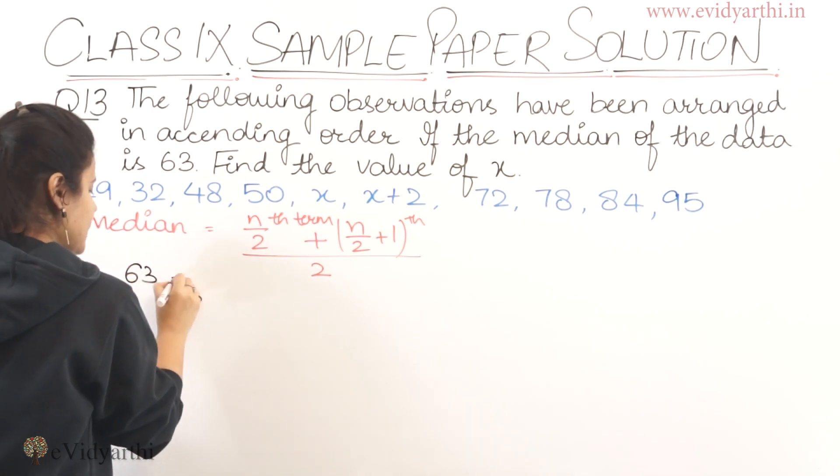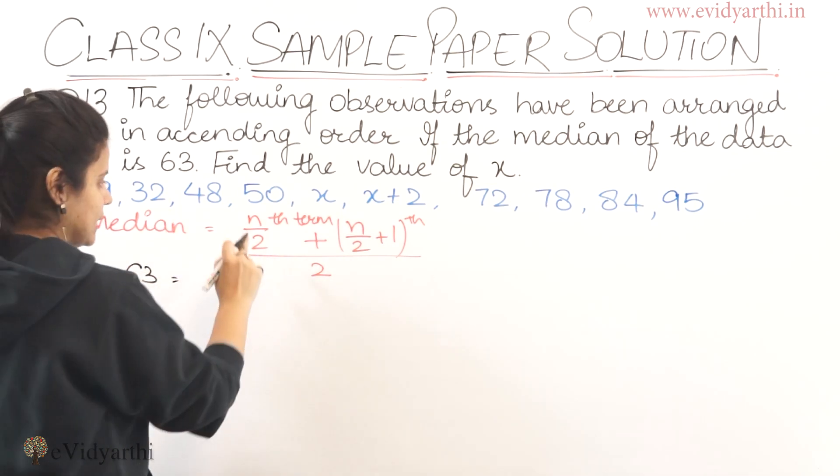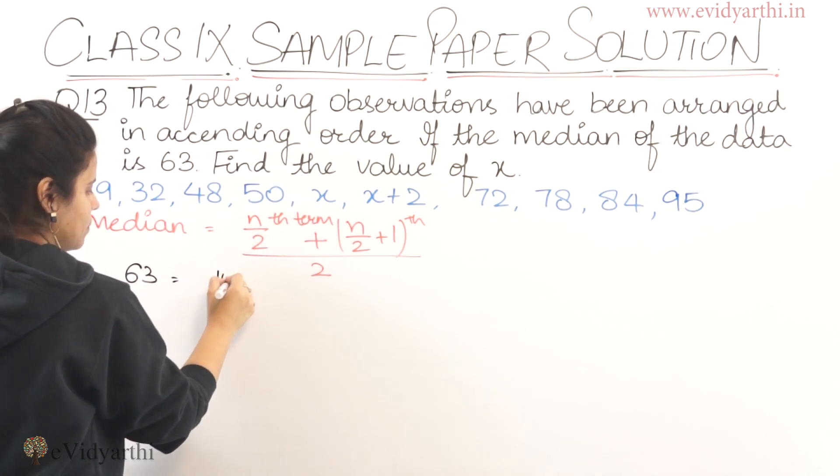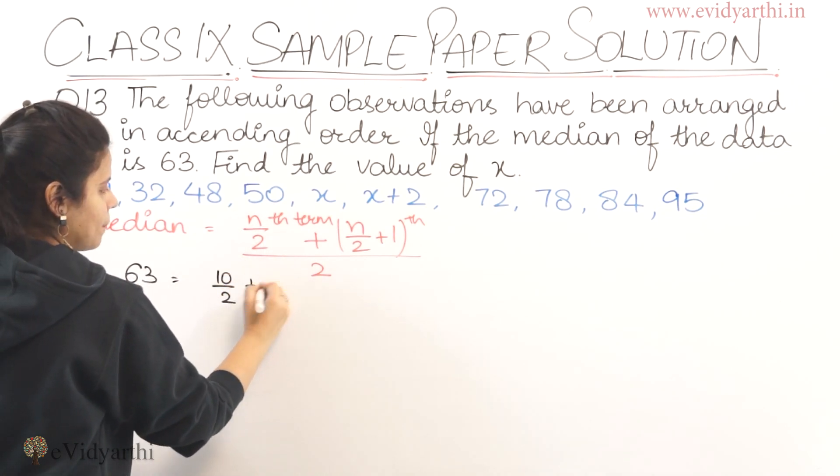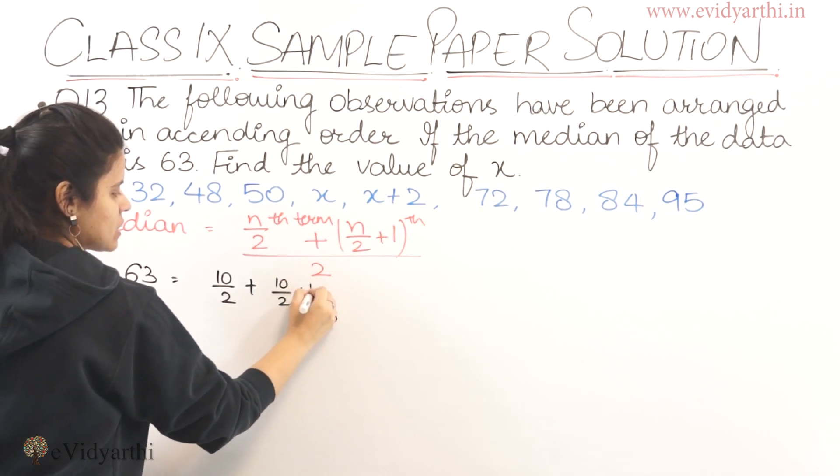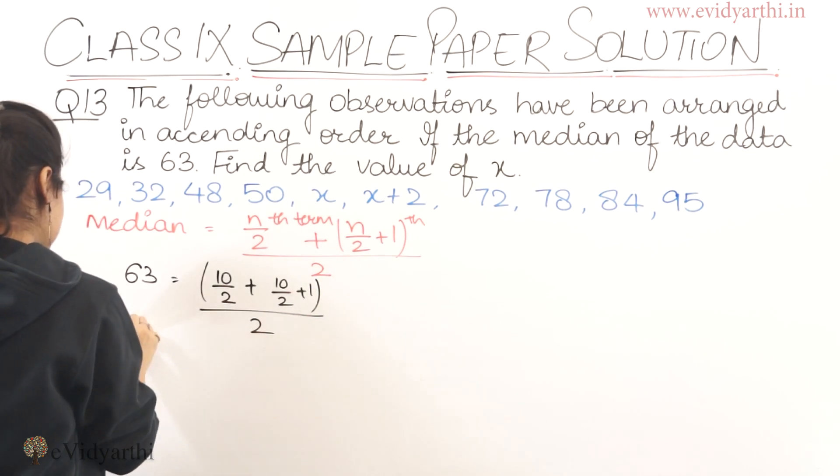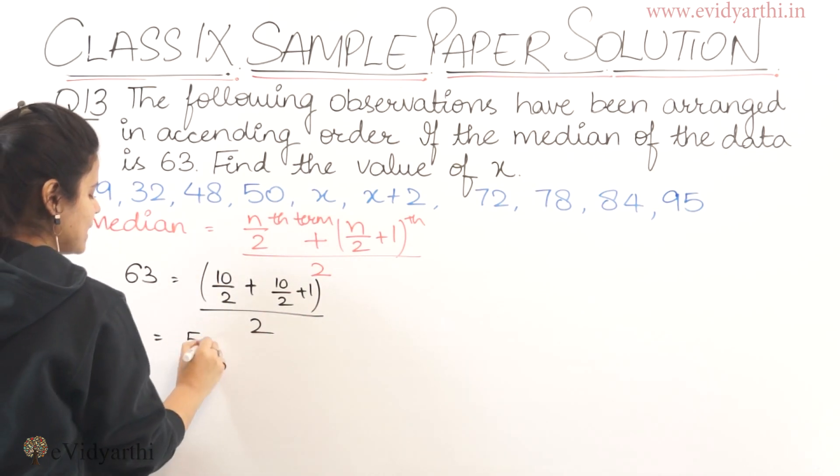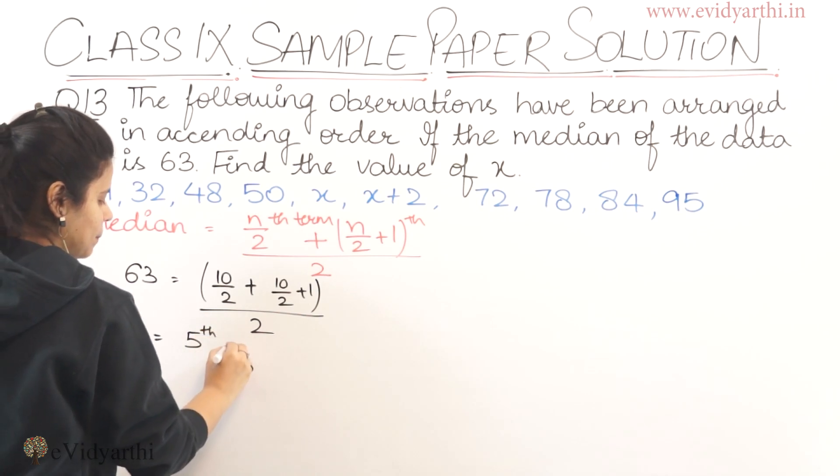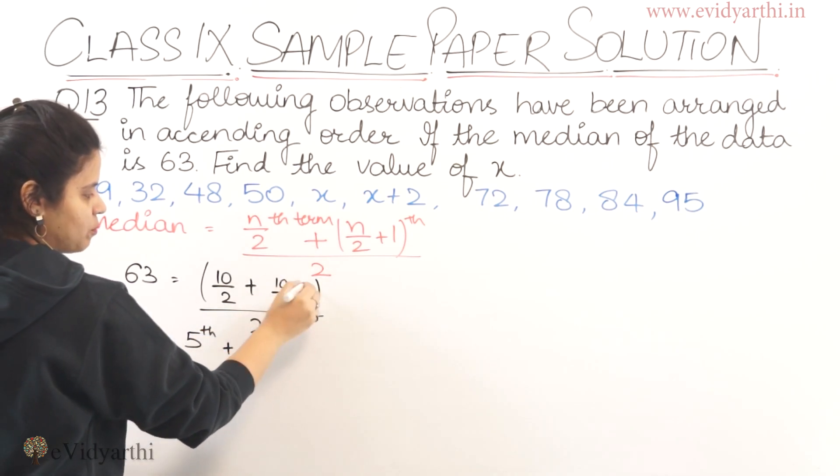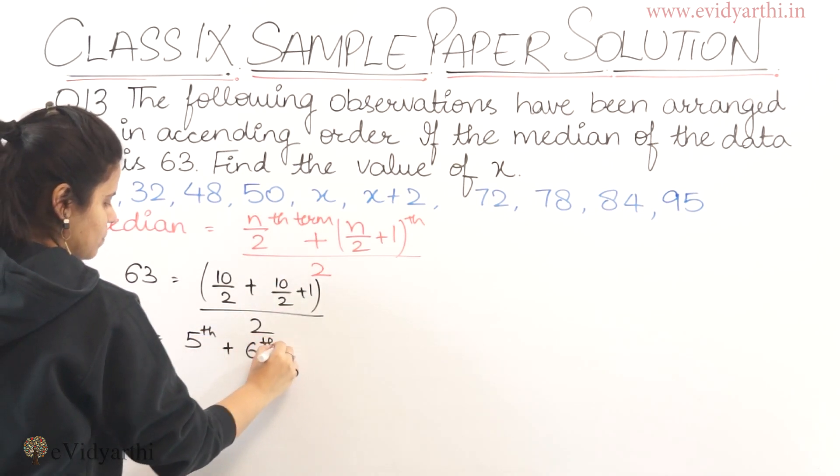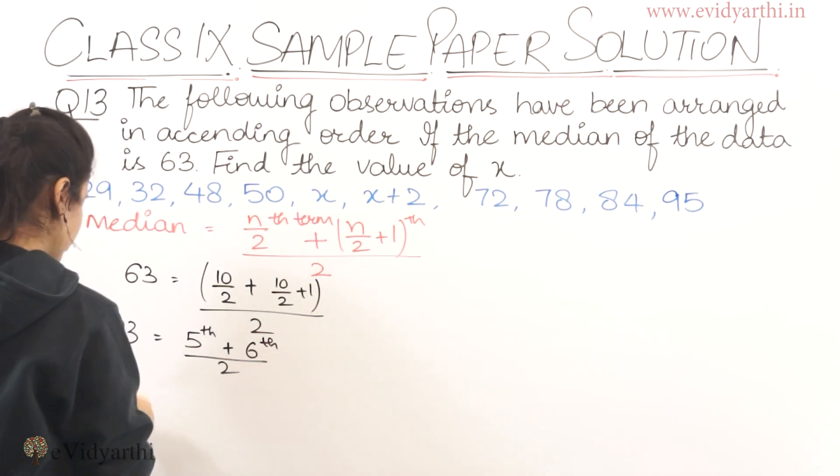So here we have to find the term. So n is 10 means 10 upon 2 plus again 10 upon 2 plus 1, whole upon 2. So 63 equals to 10 upon 2 means the 5th term plus again 10 upon 2, 5 plus 1, 6. So means the 6th term upon 2.